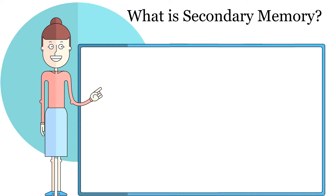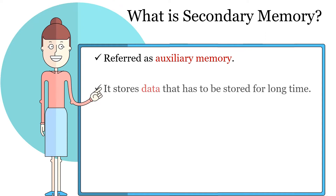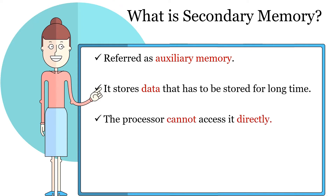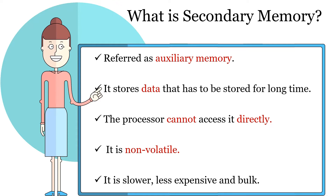Now, what is secondary memory? Secondary memory is also referred to as auxiliary memory. As it is a secondary memory, it does not hold data that need to be processed currently. Instead, it holds the data that need to be stored for a long period. The processor cannot access secondary memory directly, so it needs an I/O channel to access secondary memory. The secondary memory is non-volatile and does not lose its content even in the case of power failure. It is slower, less expensive, and is present in bulk in the system.